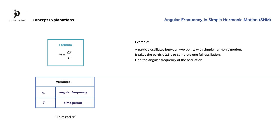So substituting, we get that omega is equal to 2π divided by 2.5, which is approximately 2.5 radians per second.